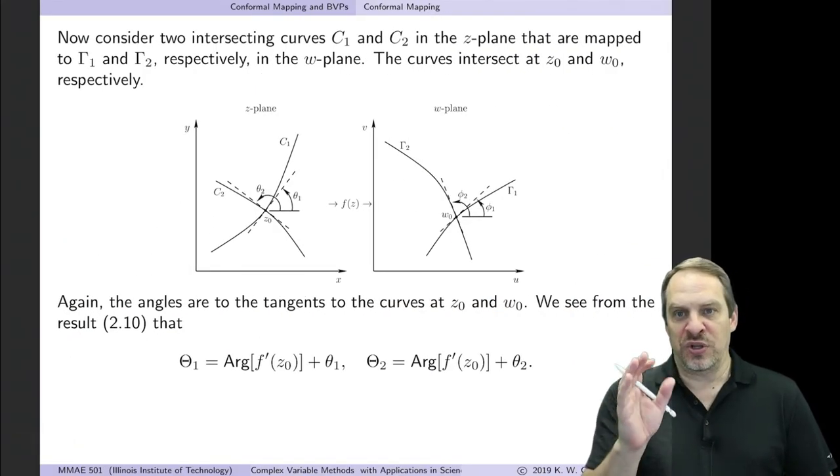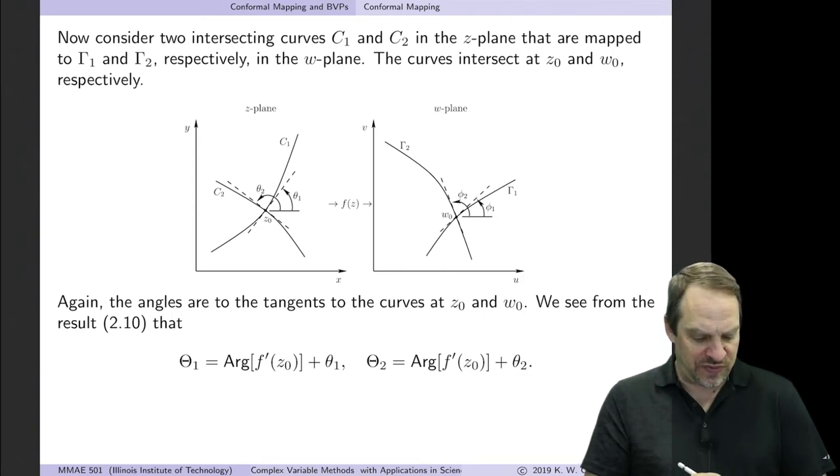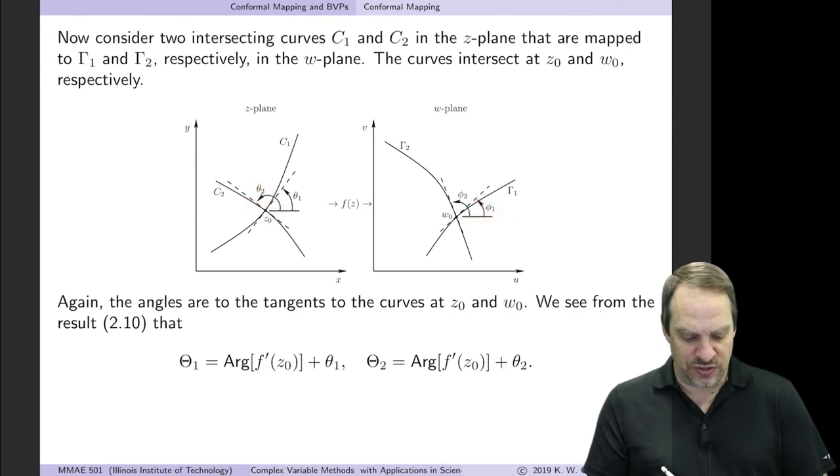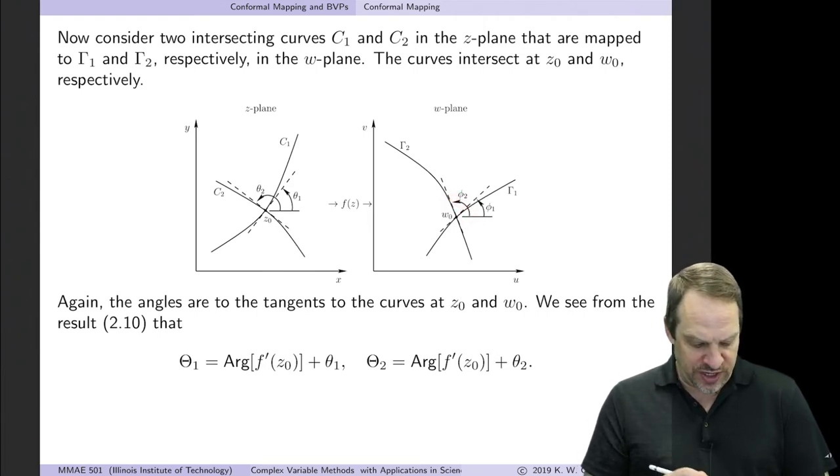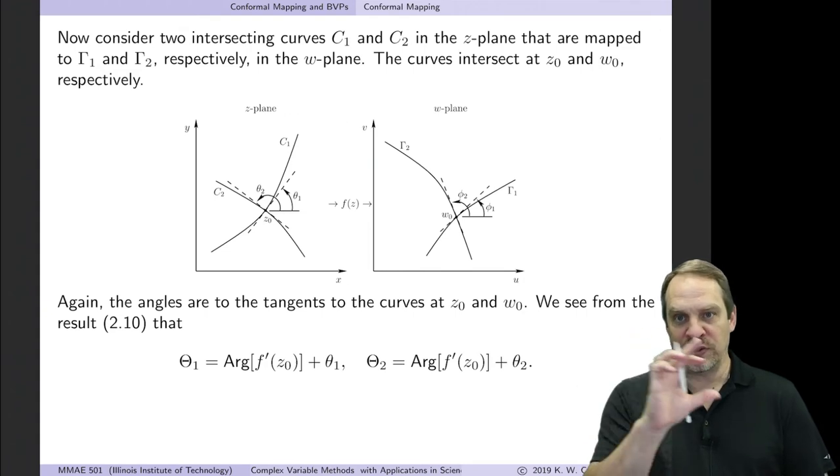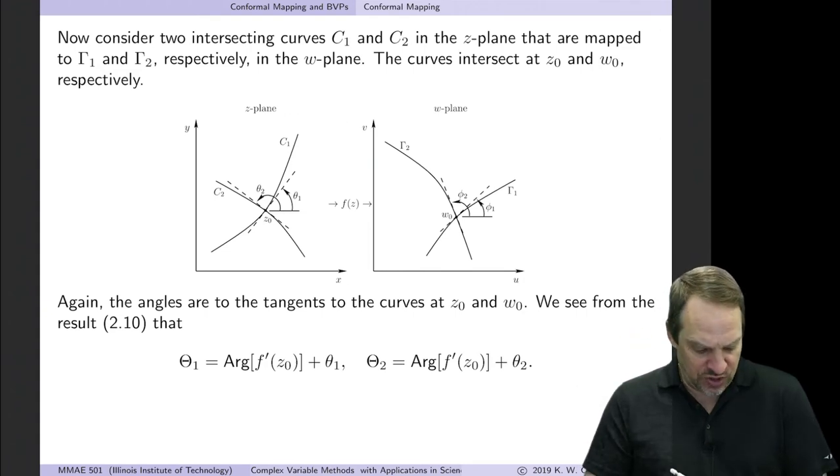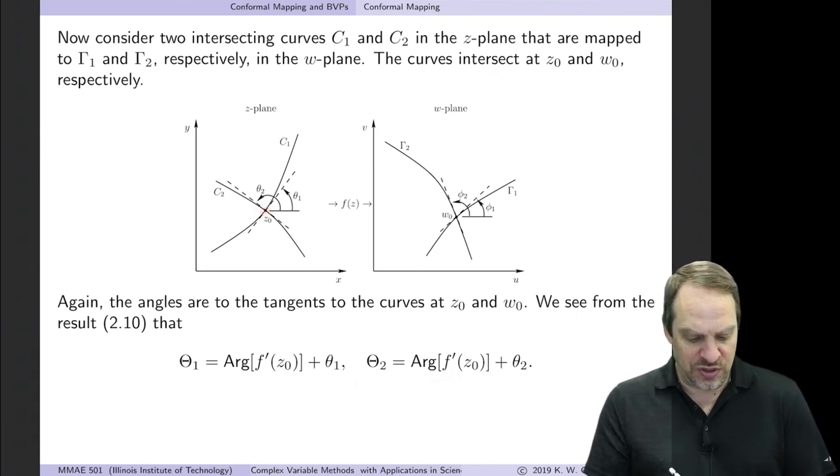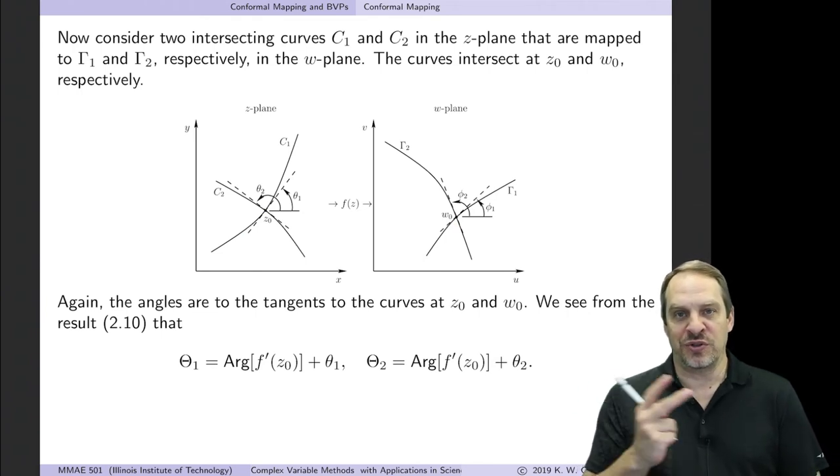So let's take this a step further. We looked at one curve and its image curve. Let's look now at two curves. So we have a curve C₁ and a curve C₂ in the z-plane and the corresponding image curves in the w-plane, γ₁ and γ₂. The angles, θ₁ are to the tangent, θ₂ to the tangent, and capital Θ are the angles to the tangents in the w-plane. So just apply the result we had for one curve in its image to now two curves in their images. So for the first curve, capital Θ₁ is the argument of f prime of z₀ plus θ₁. And capital Θ₂ is the argument of f prime of z₀ plus θ₂. Now notice z₀ and its image point w₀ is where these two curves intersect in their respective planes.